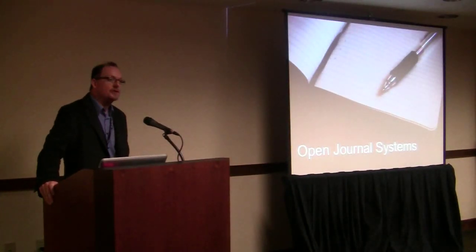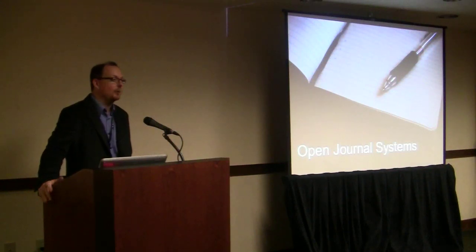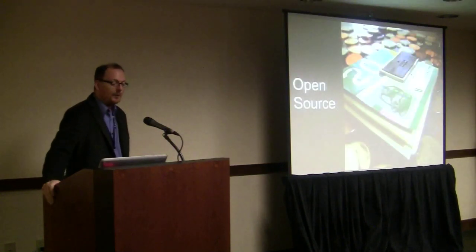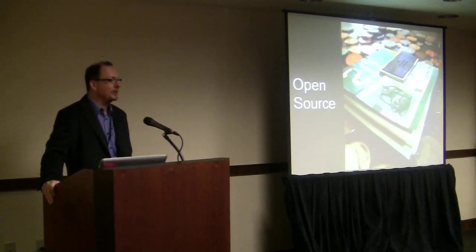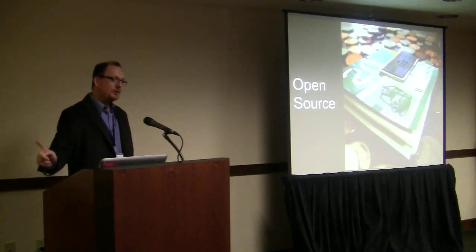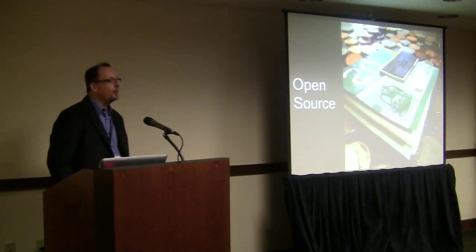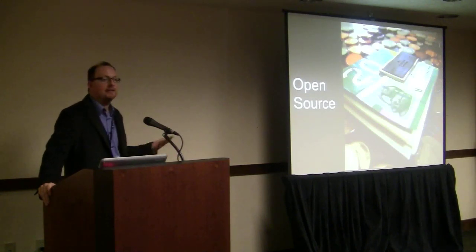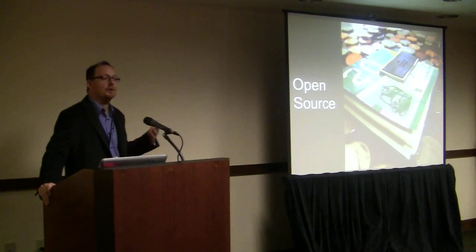The software I want to talk about is Open Journal Systems, which we at the Public Knowledge Project have developed and have been working on for over 10 years. One of the most important things to know about it is that it is open source — I'm not here asking you to give me any money. It's completely free to come to our website, download it, install it, and start using it. And most importantly, it's free and open in the sense that you can also modify it. You don't have to use it just as you find it — you can take it, manipulate it, and change it. At the heart of the software is the idea that it's a publication management system, a peer review management system. In the way that WordPress is a CMS for a blog, or Drupal can be a CMS for a website, OJS is a CMS for a peer review journal.